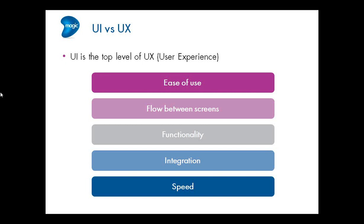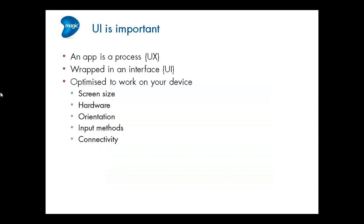UI — user interface — is the top level of the user experience. There are a bunch of other things users want: ease of use, the flow between different screens, functionality including offline and disconnected access, integration between back-end systems and the application screen, and also speed and how it deals with peaks in traffic demand. That's not to say UI isn't important — essentially an application is a process wrapped in an interface.